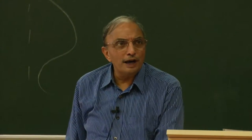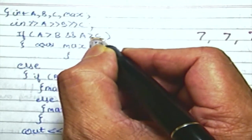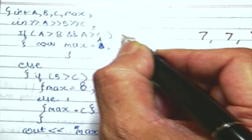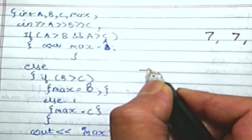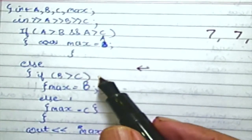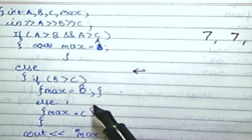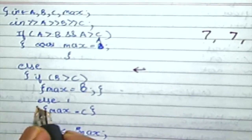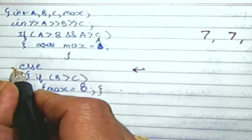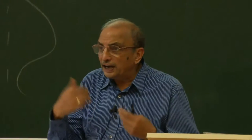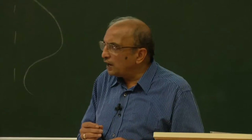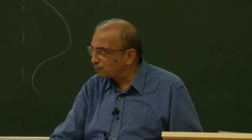He was under the impression that if all three are equal, max is not getting assigned any value at all. Actually the program is working fine. Here is another effort using nested if-else: if a greater than b, within that, check if a is greater than c — max equals a, else max equals c. If a is not greater than b, then else — if b is greater than c, max equals b; else max equals c. This will also work.